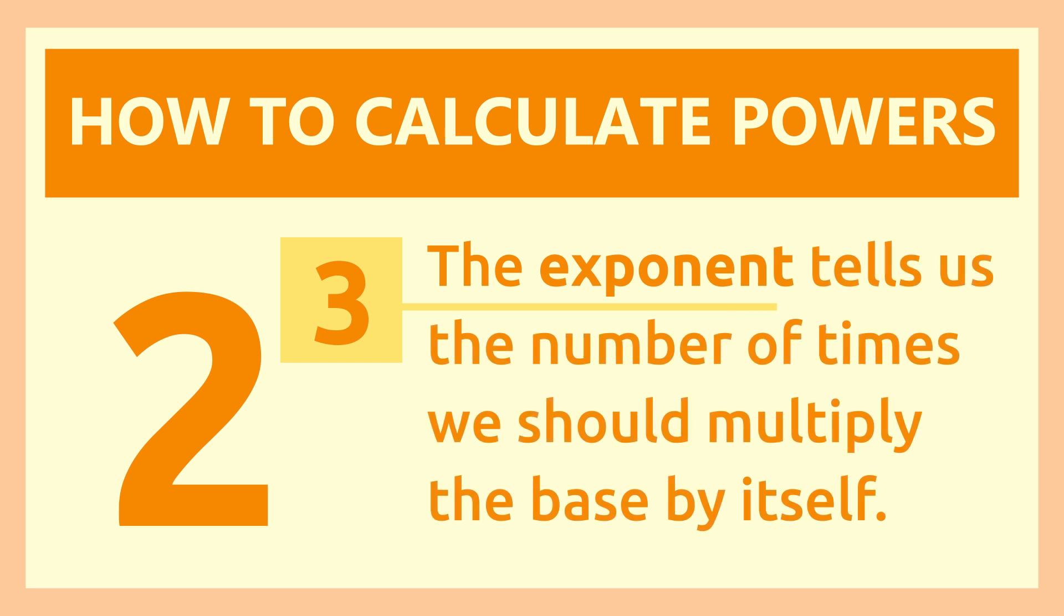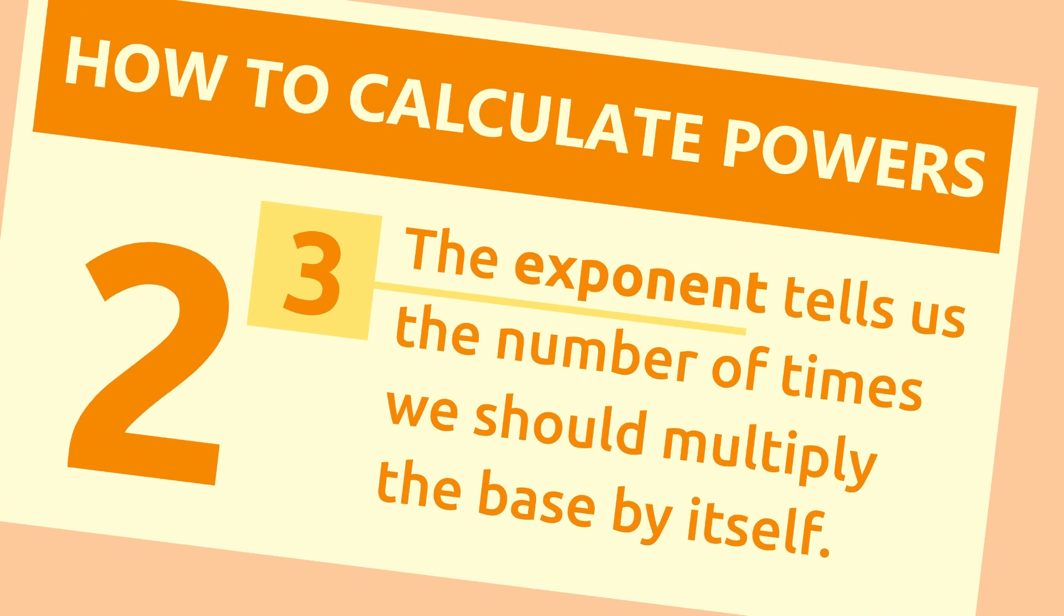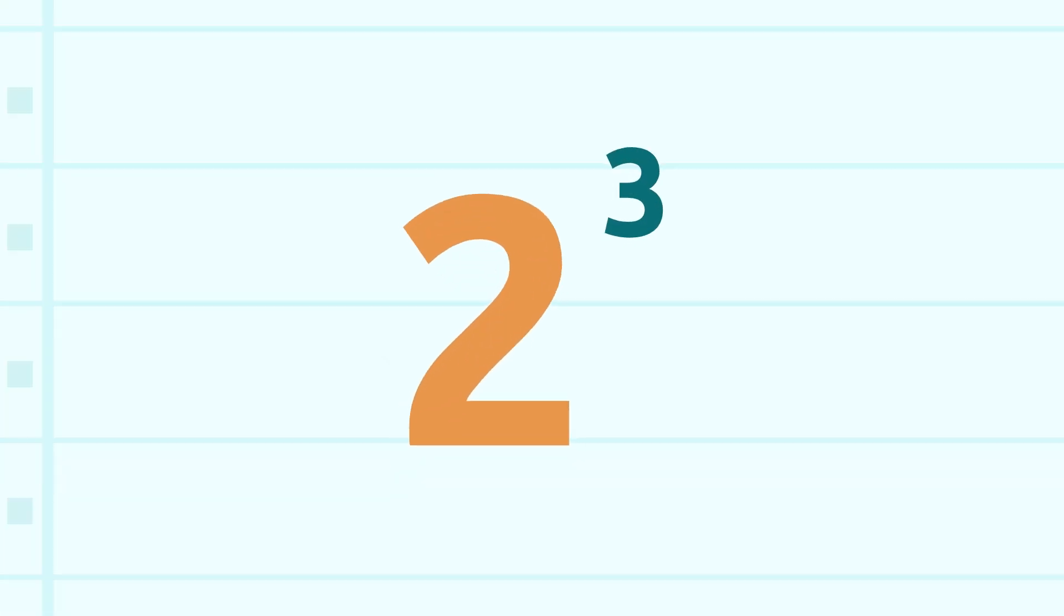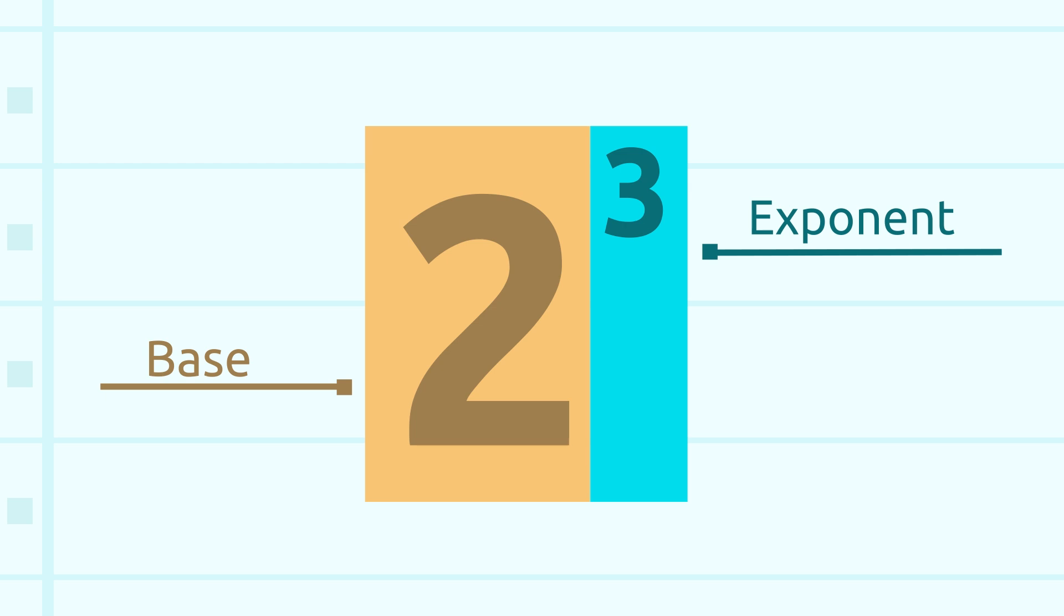Now let's see how we calculate powers. The exponent tells us the number of times we should multiply the base by itself. Let's look at the example we have on the screen: two to the power of three. As we said before, the base of this power is two and the exponent is three, which is the number of times we should multiply the base.